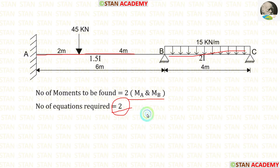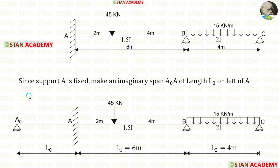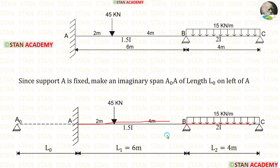But we need two equations, so we have to make one imaginary span. The imaginary span should be made from the fixed support, so we have to make an imaginary span on the left of point A. The imaginary span is A0A with length L0. Now it is possible to make two equations: the first in spans A0A and AB, and the second in spans AB and BC. Using those equations, we can find moments MA and MB.